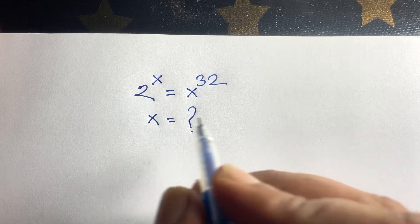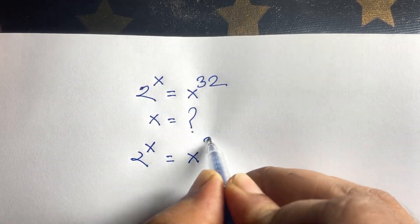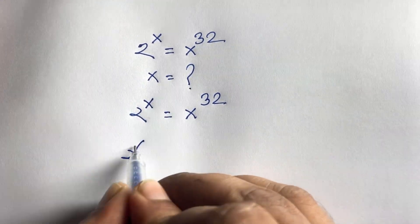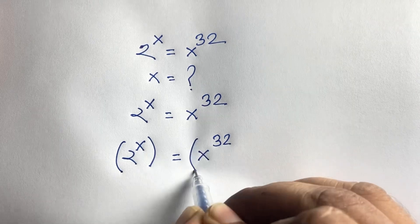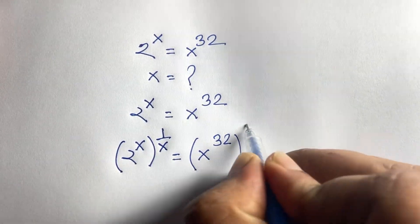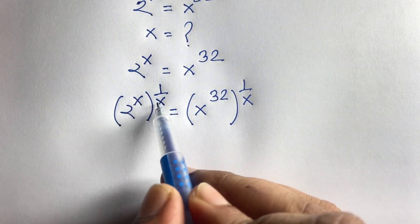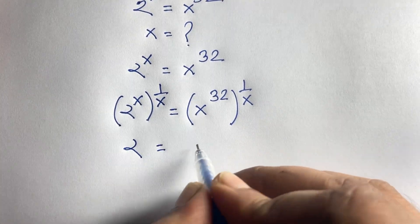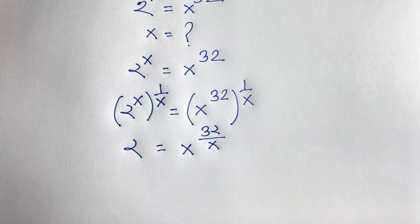Our question is 2 to the power x is equal to x to the power 32. I multiply both sides' power by 1 over x. Here is 1 over x. At this moment, this x is cancelled, and we'll find out: 2 is equal to x to the power 32 over x.